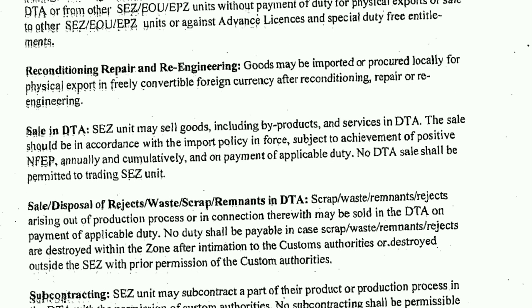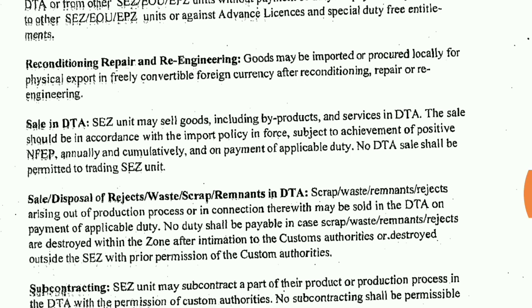For reconditioning, repair and re-engineering: goods may be imported or procured locally for physical export and freely convertible foreign currency after reconditioning, repair and re-engineering. You can convert and export in freely convertible foreign currency such as US dollars, but only in these three specific activities — reconditioning, repair, or re-engineering.